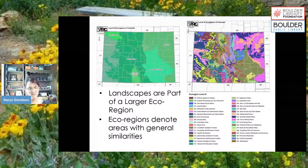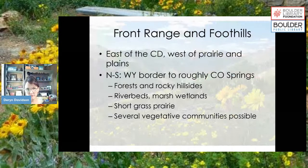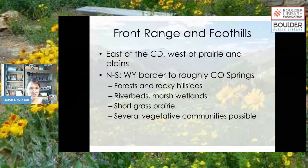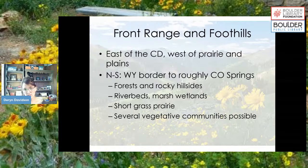We're really talking about the front range and the foothills. The front range is defined as east of the Continental Divide and west of the prairie and plains, running from about the Wyoming border down to Colorado Springs. Within that general area, you get all these different habitats: forests, rocky hillsides, riverbeds, wetlands, and short grass prairie — lots of different vegetative communities.